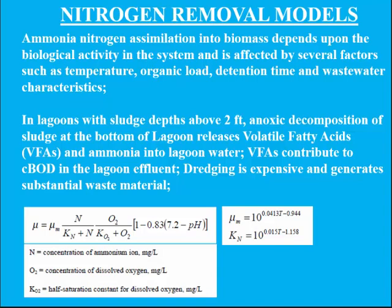In these lagoons today, we are accumulating sludge at the bottom — four or five feet of sludge. That's going to impair lagoon performance. In fact, the sludge will make its own ammonia: when you decompose biomass under anoxic conditions, it makes ammonia. So any lagoon with five feet of sludge is going to be an ammonia producer, and your effluent ammonia will be higher than the influent. The lagoon is not solving anything — it's creating a problem. Dredging is expensive, generates a lot of waste, and is not a good solution.